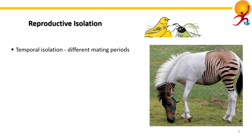Temporal isolation is when two species are ready to mate at different times. For example, one species might be active during the day and the other at night, or they mate in different seasons.